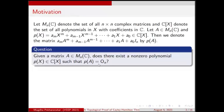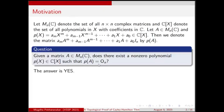So we ask the non-trivial question: given A in M_n(C), does there exist a non-zero polynomial P(X) in C[X] such that P(A) is the zero matrix? The answer to this question is yes. Consider the space M_n(C) as a vector space over C. What is its dimension? N squared.